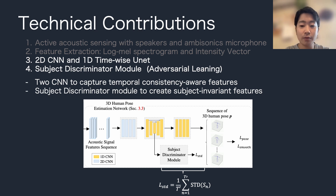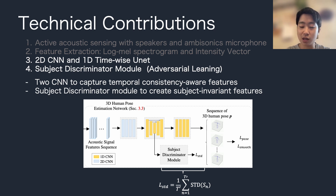Here, we propose a subject discriminator module to decrease feature distributional shift among subjects. We use adversarial learning by preventing this discriminator from accurately predicting subjects.